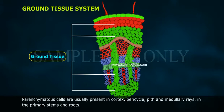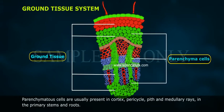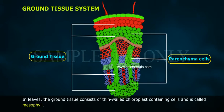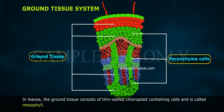Parenchyma cells are usually present in cortex, pericycle, pith, and medullary rays. In the primary stems and roots, and in leaves, the ground tissue consists of thin-walled chloroplast-containing cells and is called mesophyll.